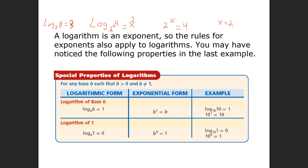This rule should make sense. If you had the log base 5 of 5 is equal to x, what does that equal? Shouldn't it equal 1? Because 5 to the first power is equal to 5. So the log base 5 of 5 is equal to 1. Anytime you have the same base and argument — log base 7 of 7 equals 1, log base 9 of 9 equals 1 — because 9 to the first power gives you that.